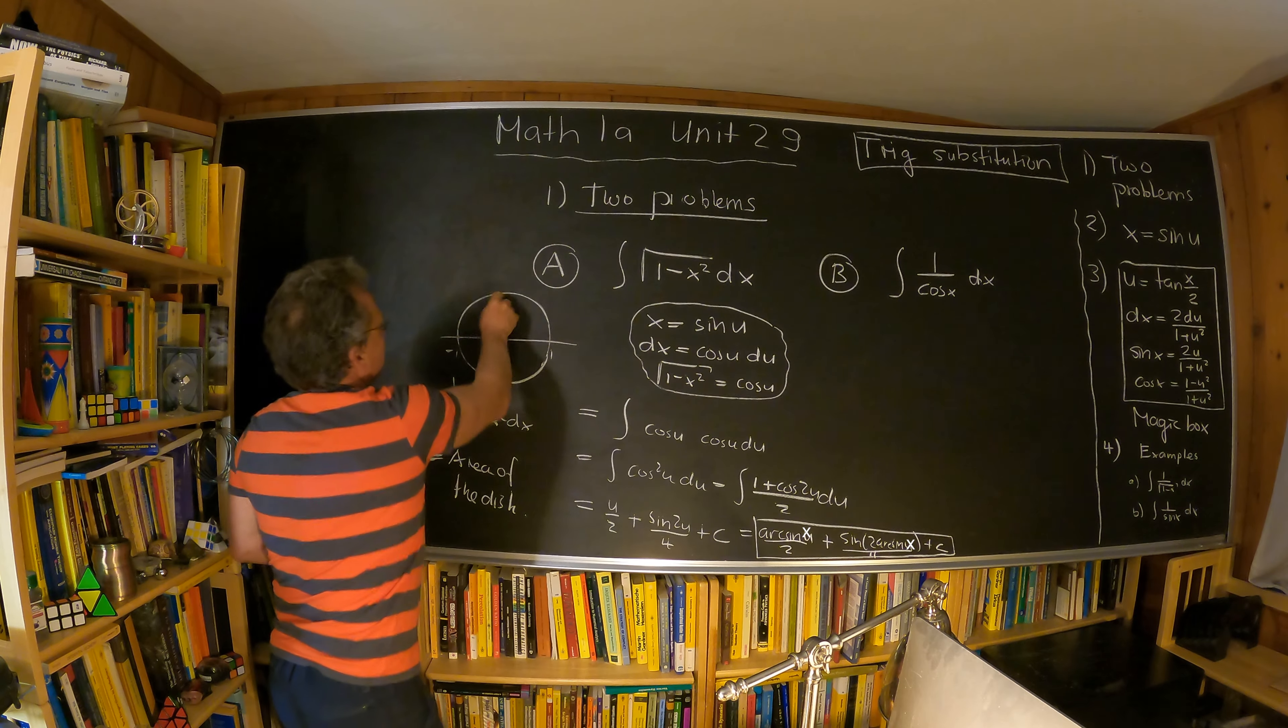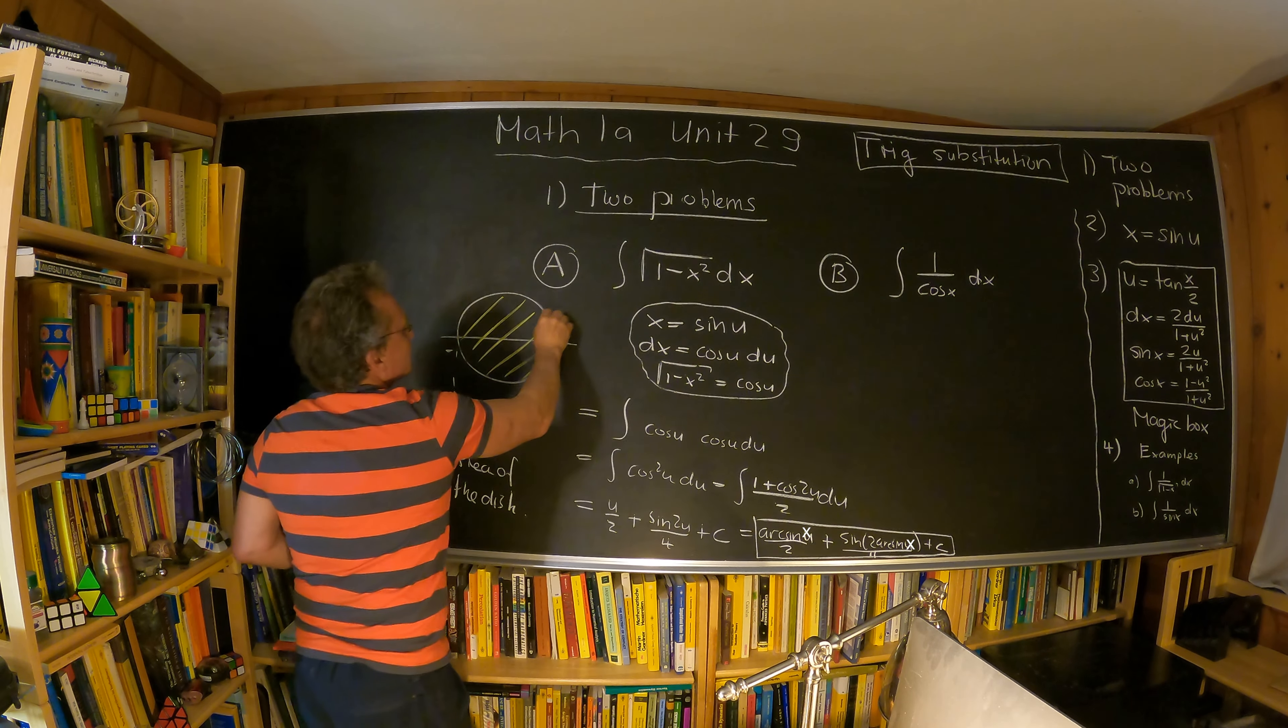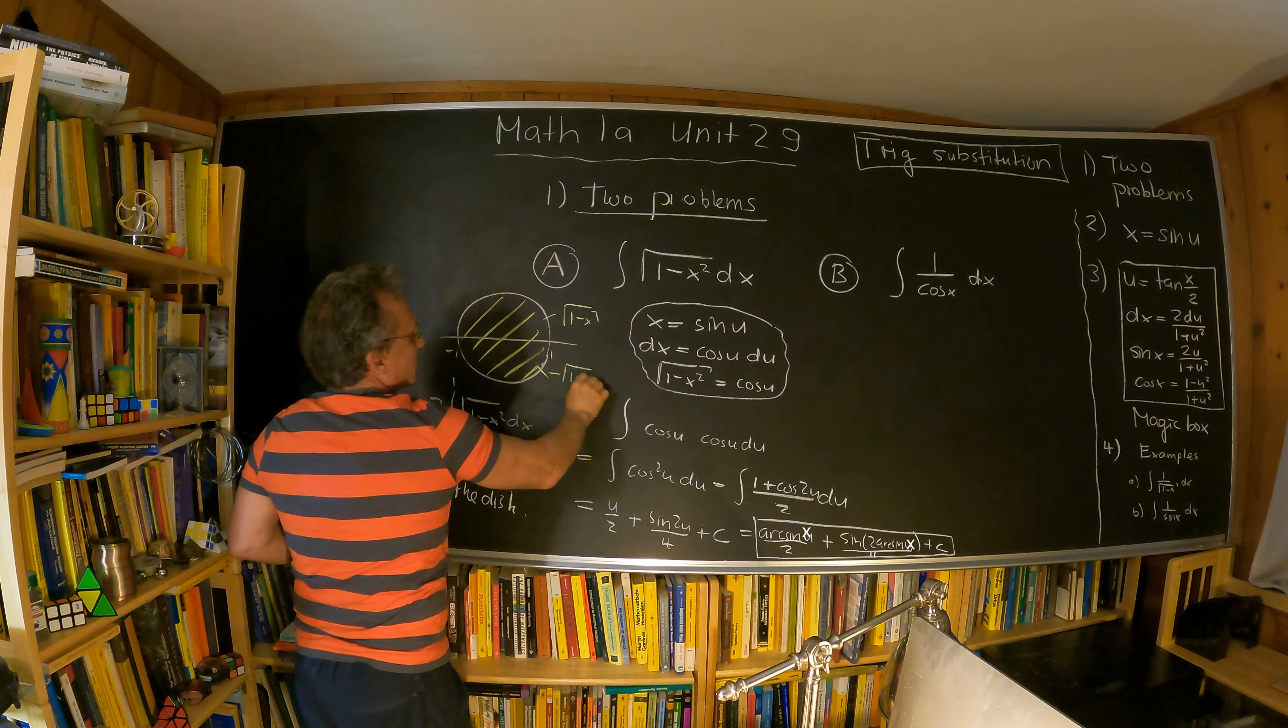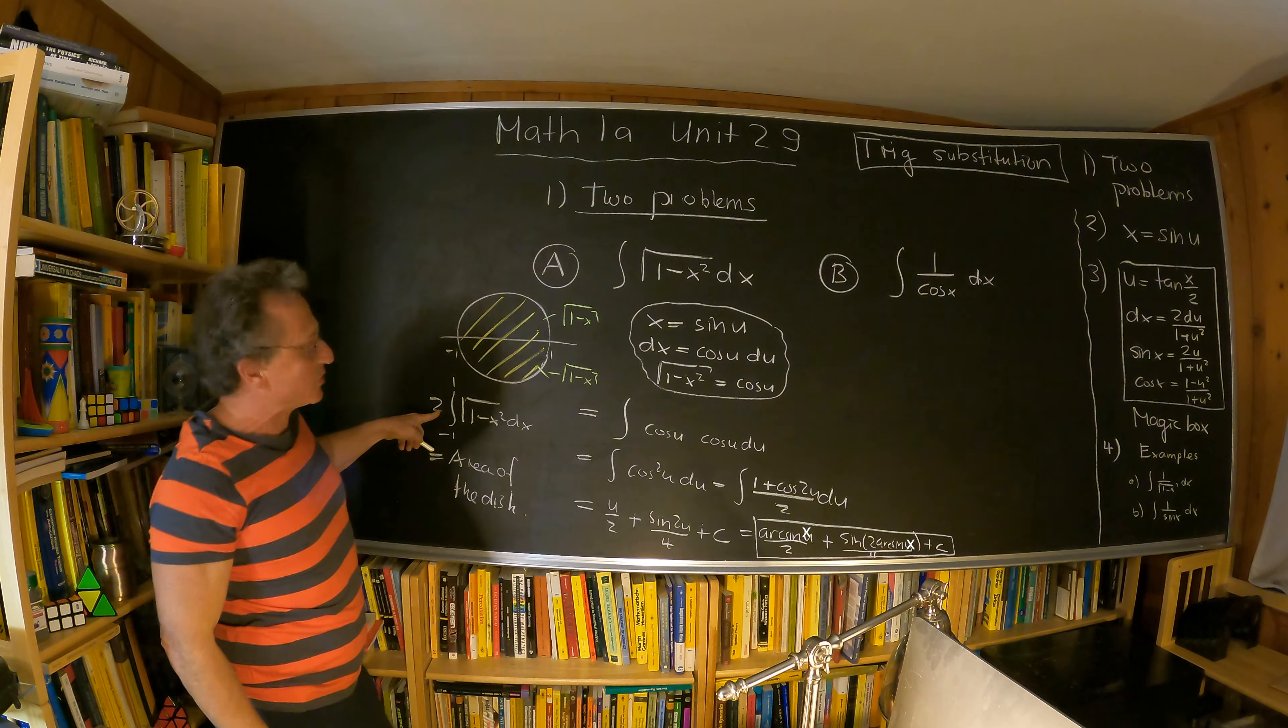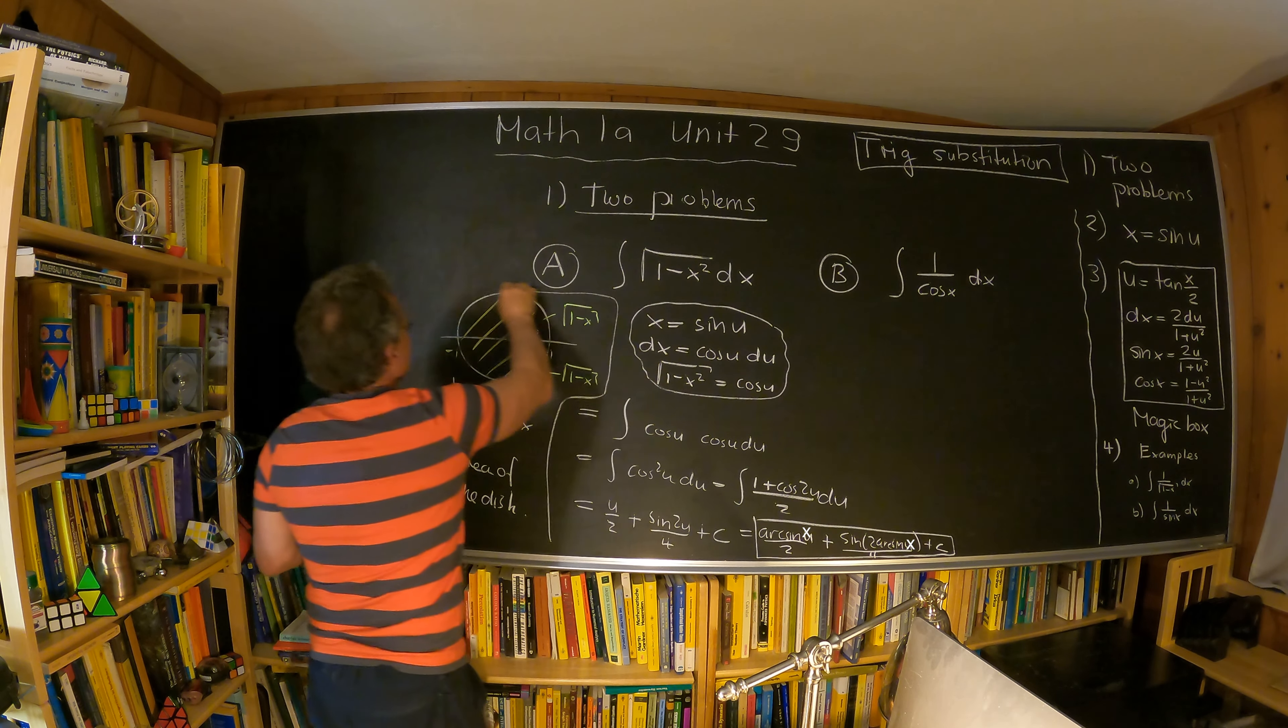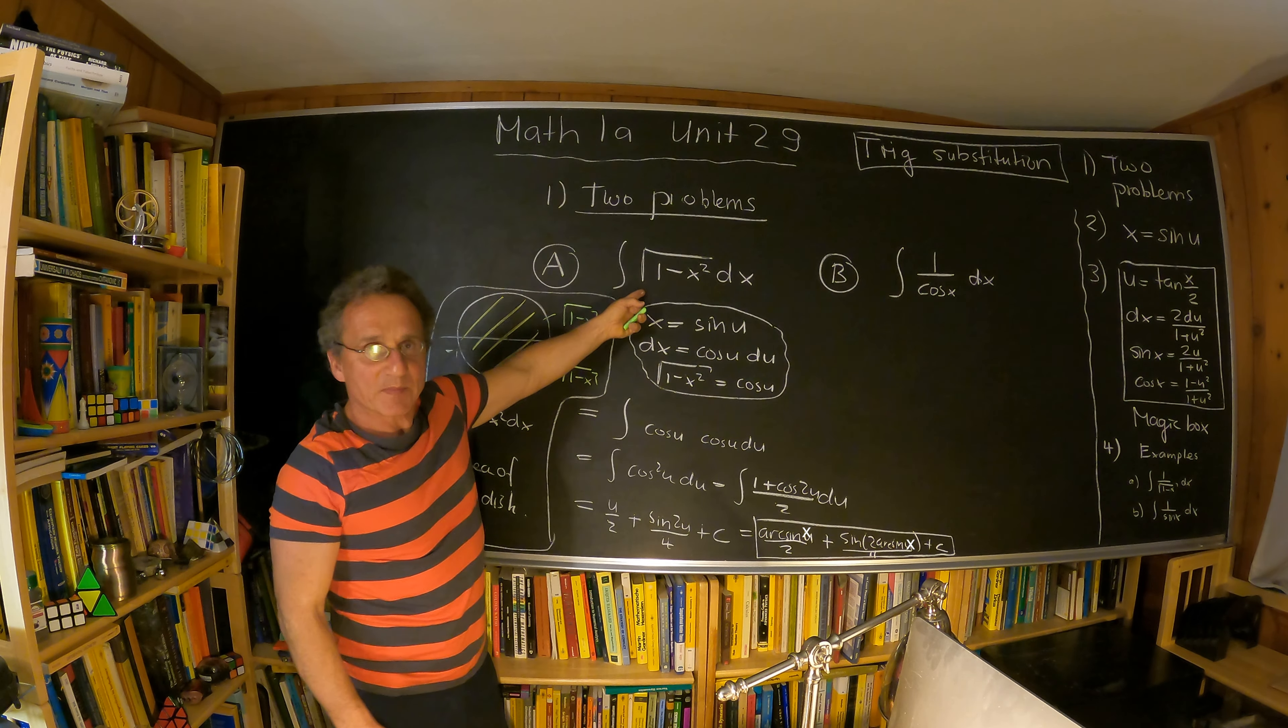So this area here. And we have this function here. This is the square root of one minus x square. That's minus square root of one minus x square. That's why we have a factor two here. So this is an application of this integral.